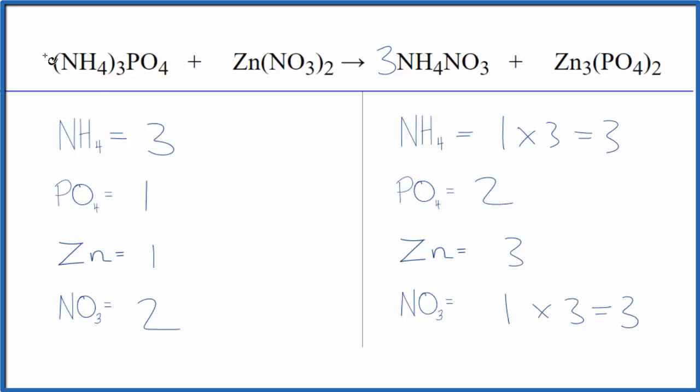Let's do the phosphate next. We could put a two in front of the ammonium phosphate, so now I have three of these ammoniums times two - three times two gives me six - and my one phosphate times two, those are balanced.